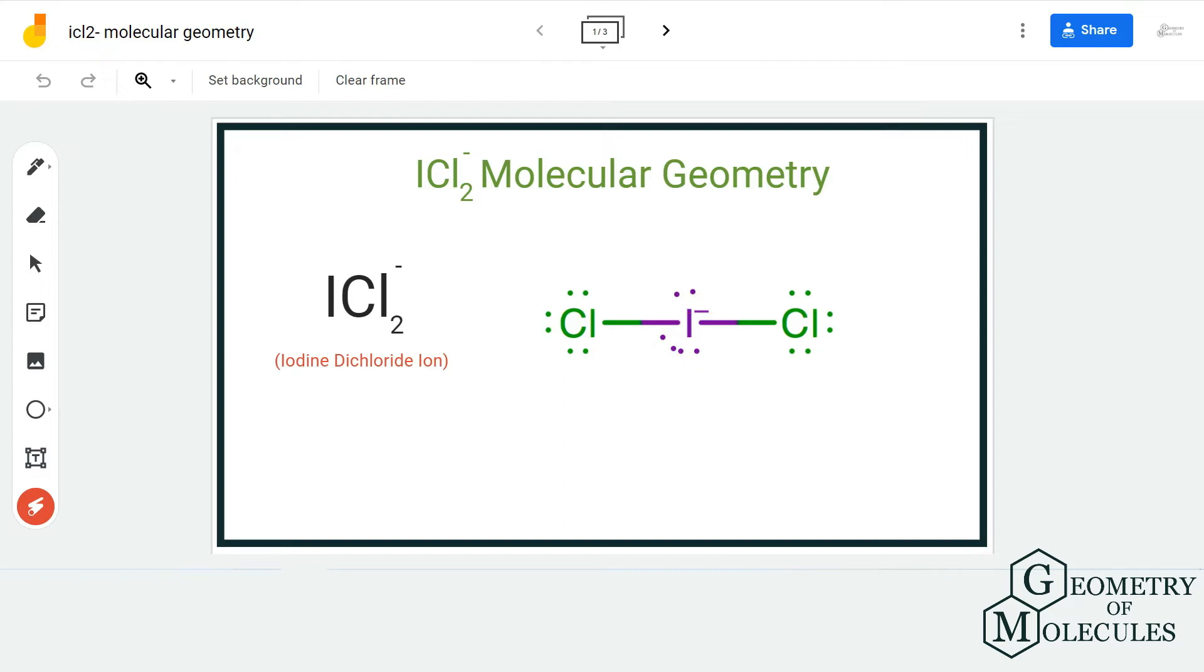Now whenever you want to determine molecular geometry of any molecule, we can use AXE notation or the steric number. Here we are going to use the AXE notation. We are also going to look at its shape. So if you look at its shape, it is linear.